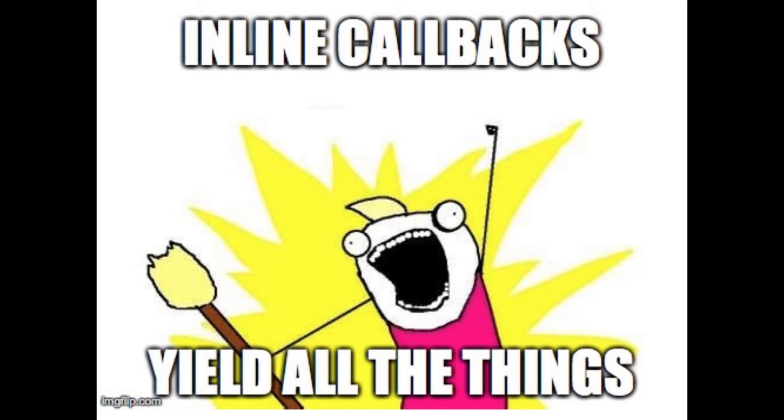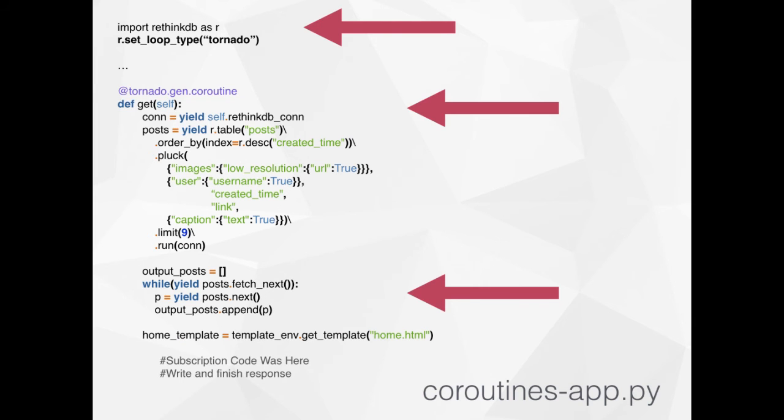That's where coroutines come in. Tornado recently implemented coroutines, and what they look like to a Python person is basically inline callbacks — you get to yield everything and it's actually quite great. RethinkDB has written a special part of the Python driver so it works well with Tornado. You have to set r.setLoopType to tornado for it to work properly. Then instead of @tornado.web.asynchronous, you use coroutine. Everything that has some sort of network I/O with RethinkDB, you just yield it. The advantage over a synchronous framework is that at every yield point, it can switch to another incoming request and start processing while waiting for RethinkDB to respond.